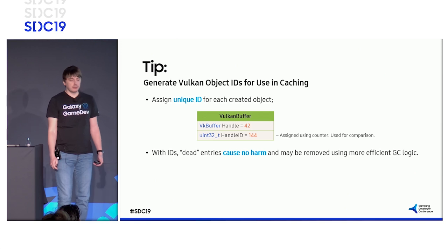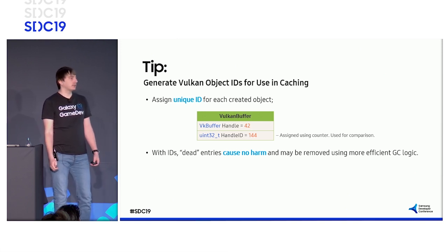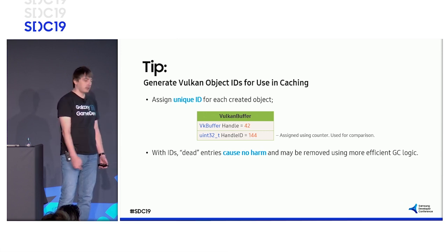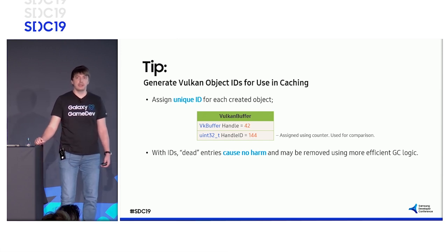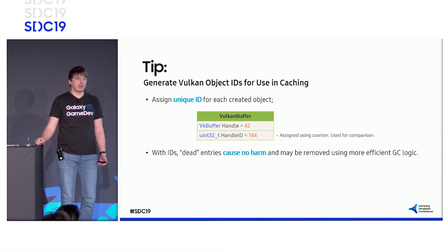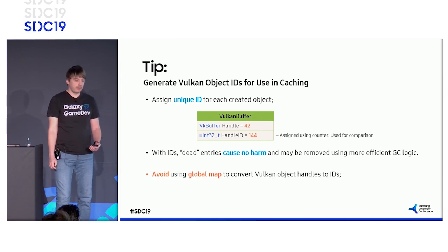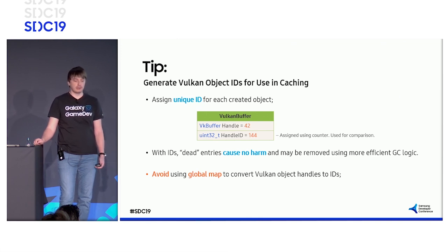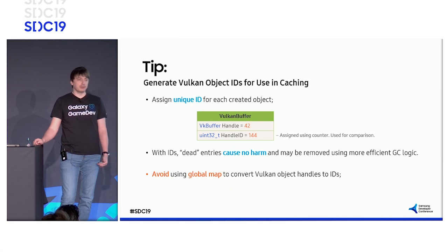It is much safer to assign unique IDs for each created object. We recommend implementing this by declaring wrappers that contain both the handle and the ID. Unlike with handles, when using IDs, dead entries cause no harm and don't need to be tracked and removed individually. Instead, you can use a more efficient garbage collection logic. Avoid using a global map that converts handles to IDs — this will add significant CPU overhead and still will not work with dead handles.